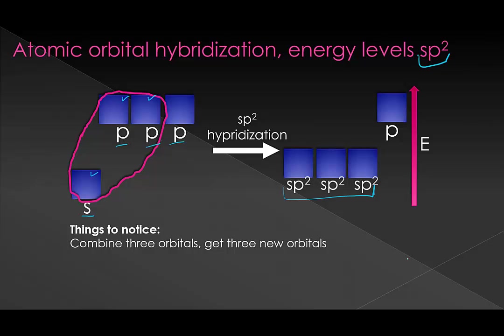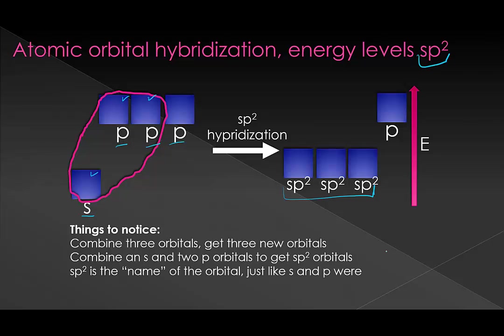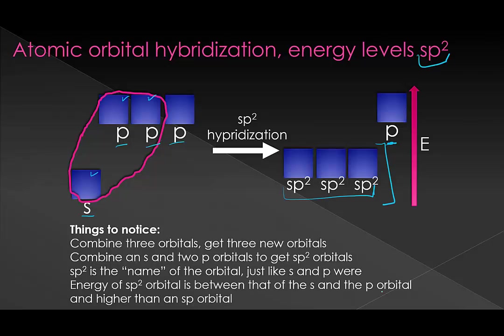We combine three orbitals to get three new orbitals. Because we combine an s and two p orbitals, we use the name sp2. After hybridization, we no longer have an s orbital, and we only have one p orbital, but we have three sp2 orbitals. The energy of these hybrid orbitals is somewhere in between the initial orbitals — higher than an s orbital, lower than a p orbital.